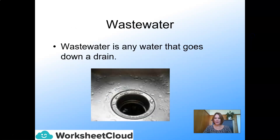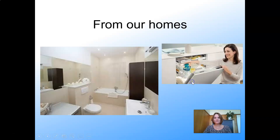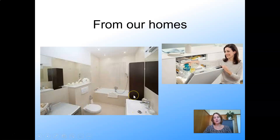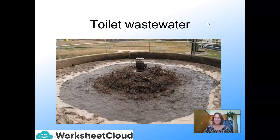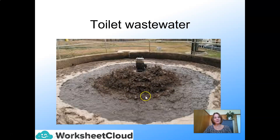Wastewater is any water that goes down your drain. It could be from any drain in your home: the dishwasher, your toilet, your bath, your shower, your basin — wherever water flows out of your home, even your washing machine. It flows away and is known as wastewater. This is what toilet wastewater looks like when it reaches a water treatment plant, which we're going to get into in more detail as we go through this lesson.